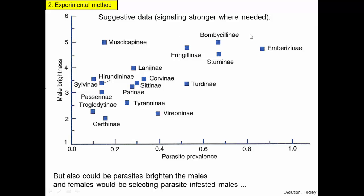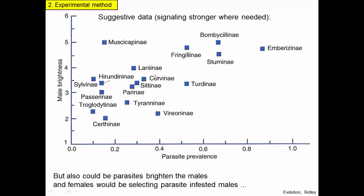On the other hand, this is just a correlation, and correlation doesn't automatically imply causation. Thinking about it another way: where there are more parasites, the males are more brightly colored, so females choosing more brightly colored males might just be choosing males with more exposure to parasites — which doesn't make much sense. Although data like this can be interpreted to support our model, correlation is not automatically causation. We want something better than just this, so we should do an experiment.